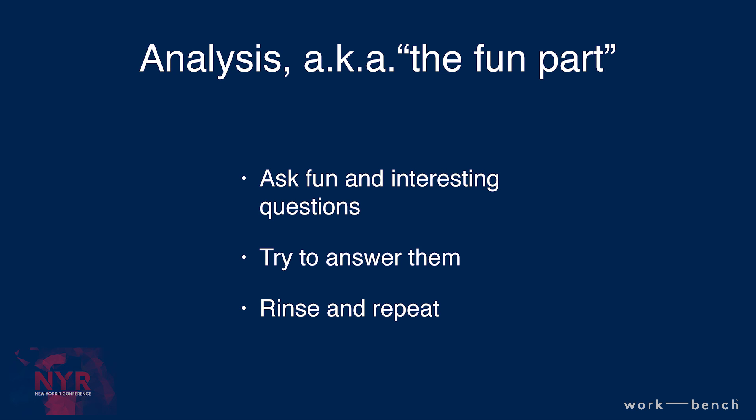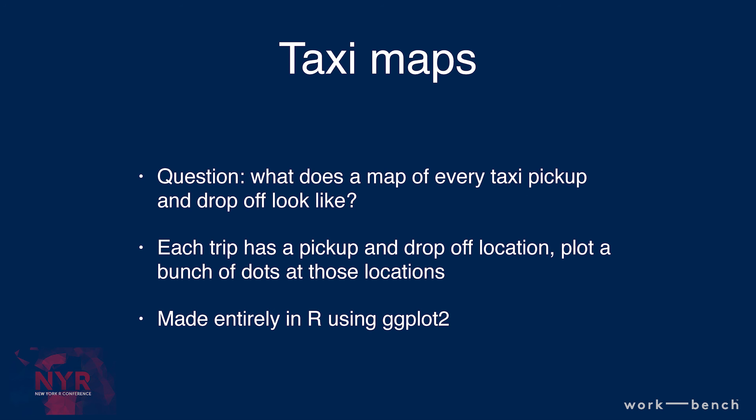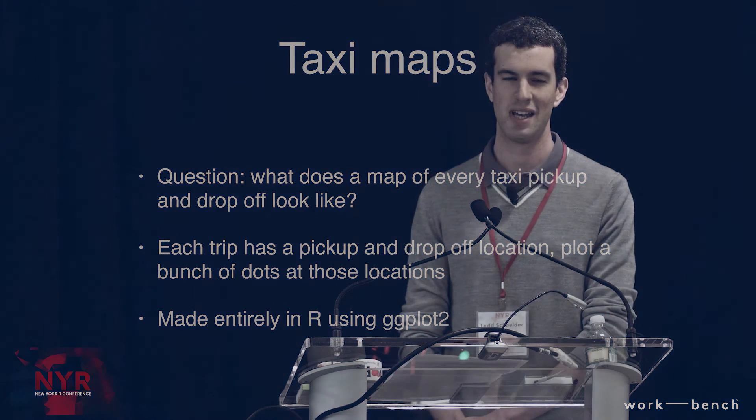That brings us to the analysis step — the fun part, where you get to ask interesting questions, figure out how you want to attack them, and keep doing that until you're satisfied. Let's go through some examples with the actual taxi, Uber, and city bike data. The first is motivated by the question: what does a map look like of every taxi pick-up and drop-off since 2009? This is a good place where R comes in, because R is very good at plotting. I did this using R and ggplot2.